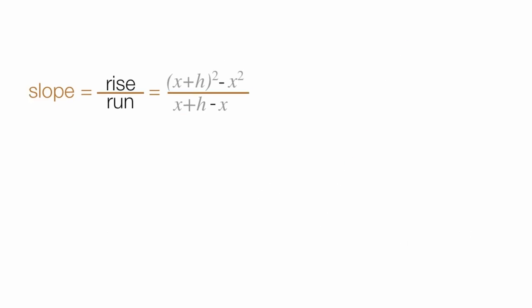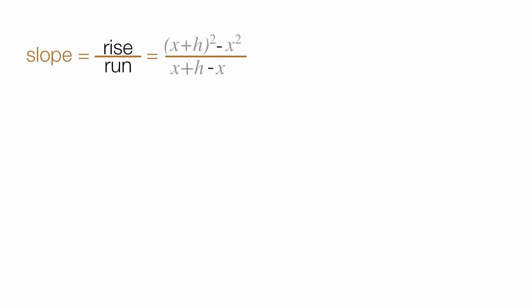Now I'm going to use a little bit of algebra. x plus h squared is just x plus h times x plus h minus x squared, and that completes the numerator. In the denominator, or the run, the two x's just cancel out, so I just have h.